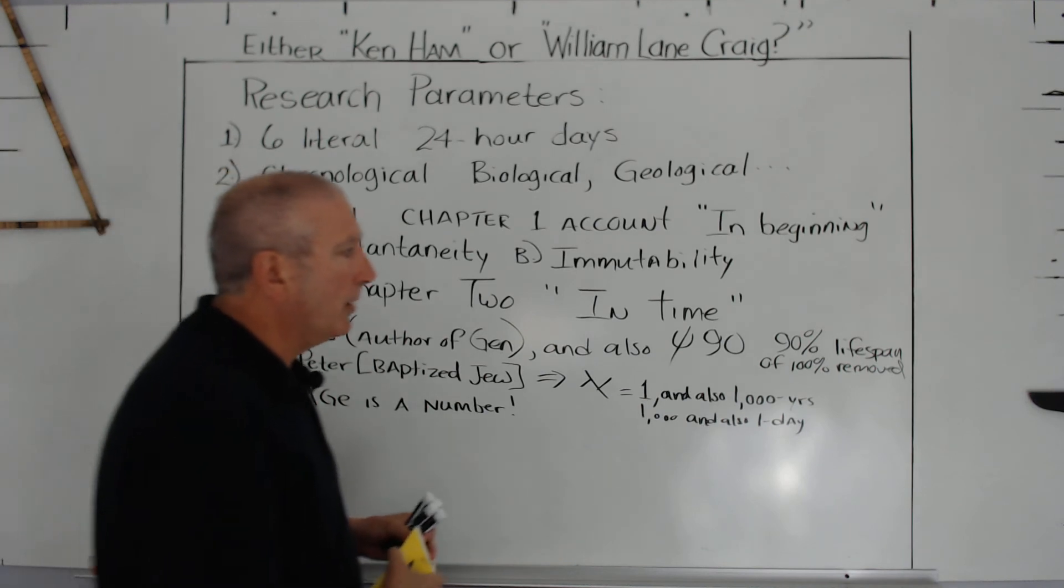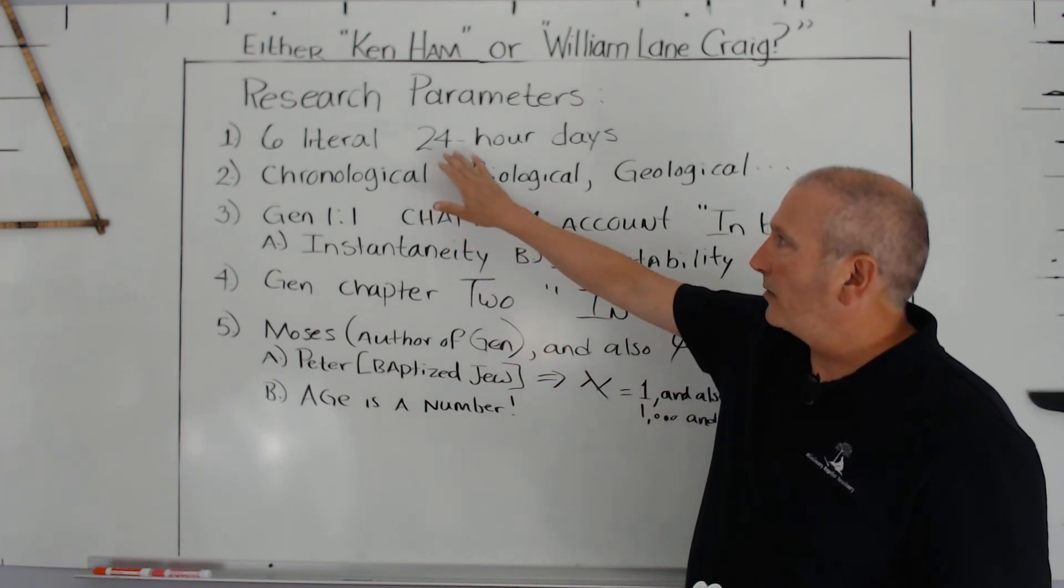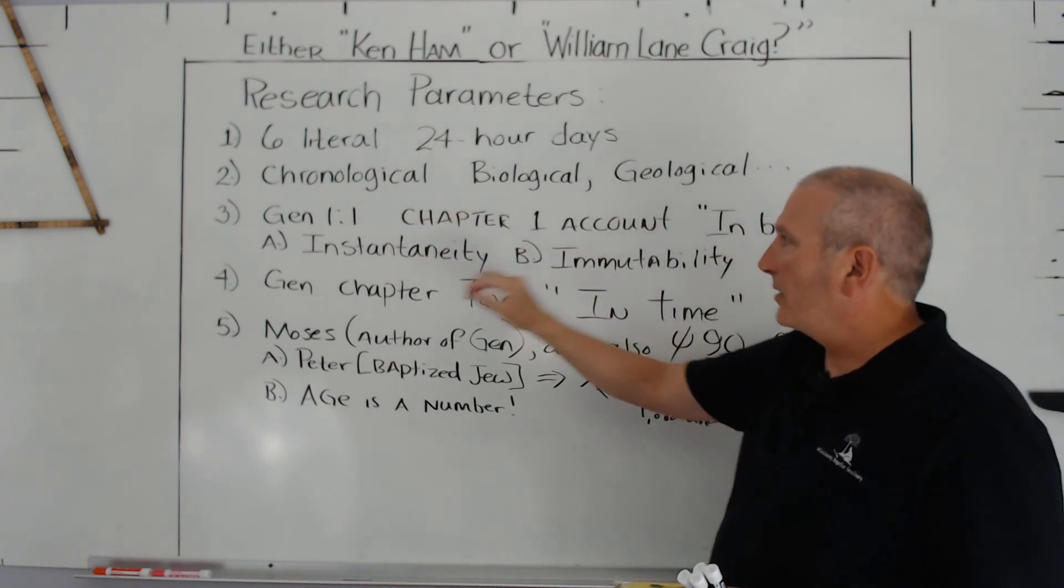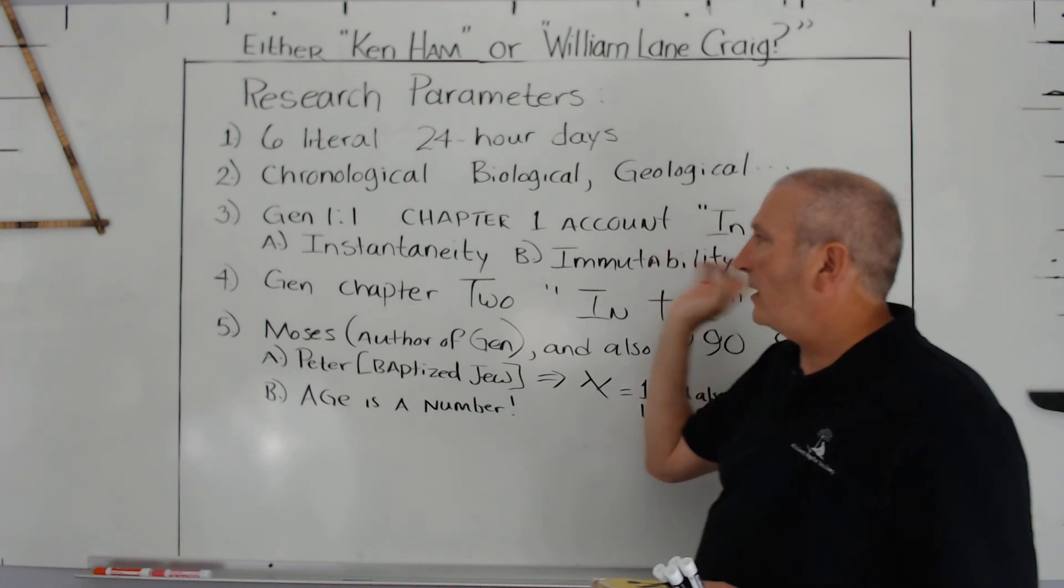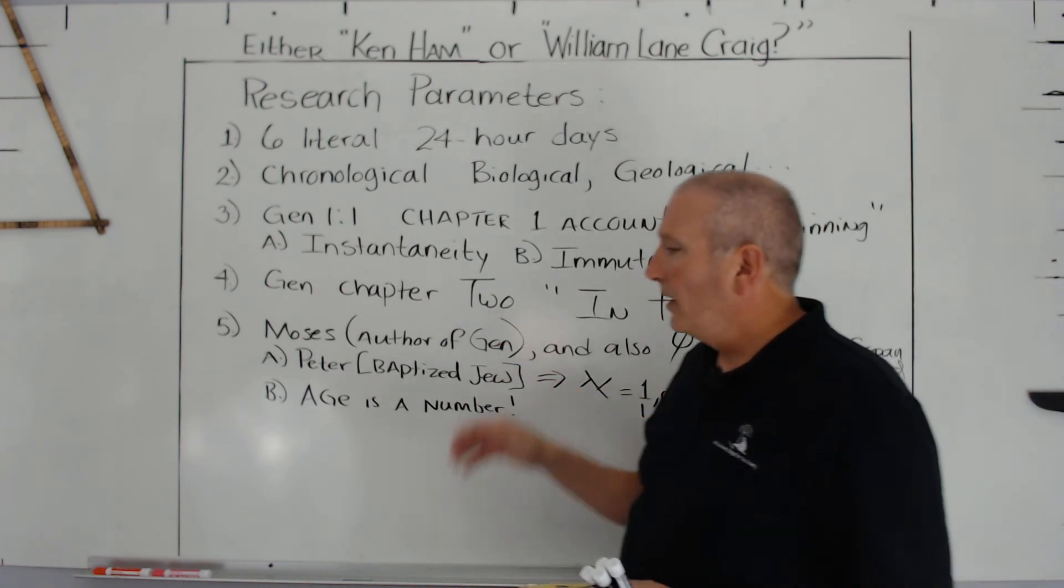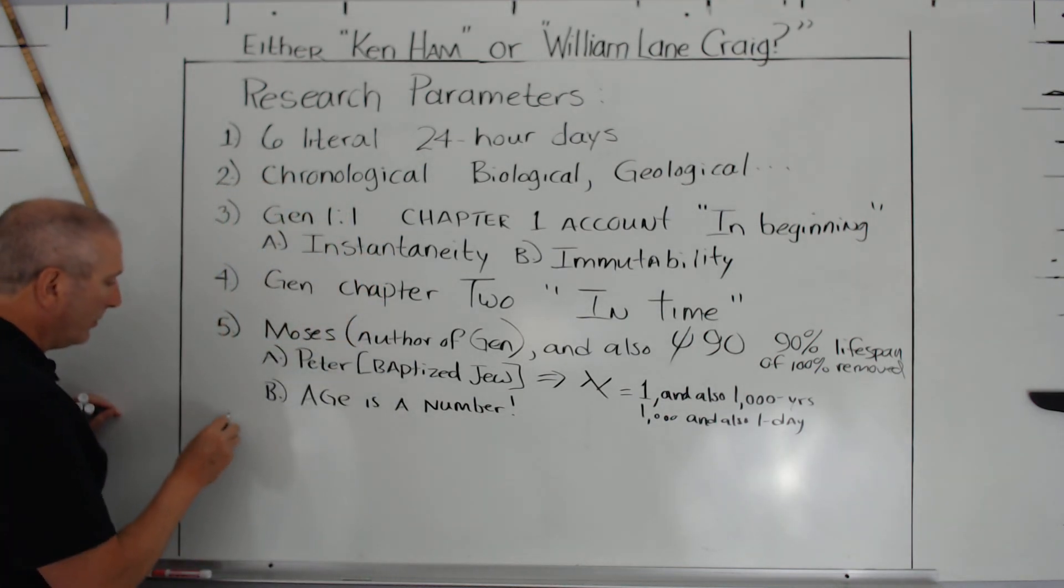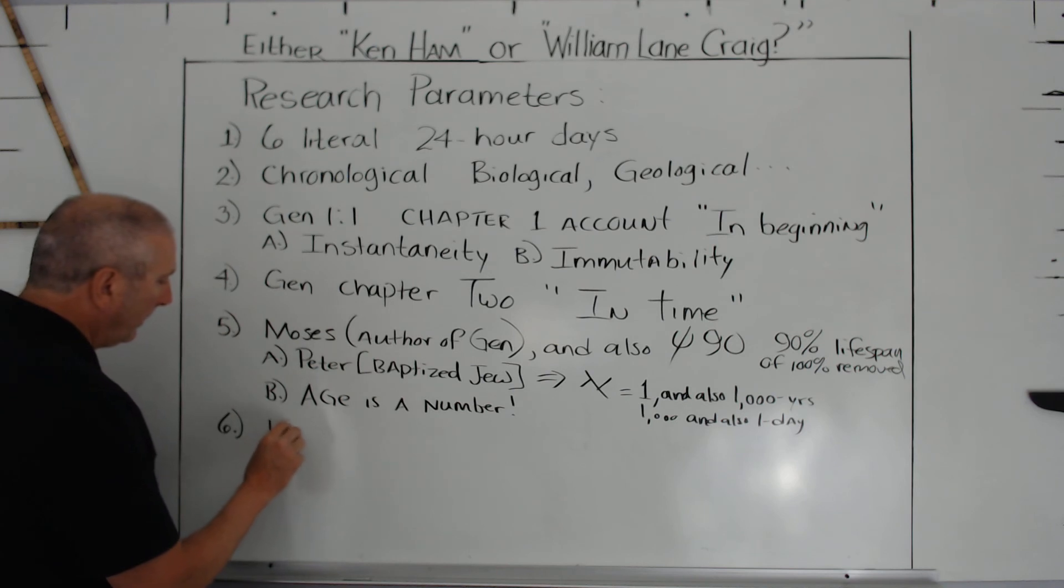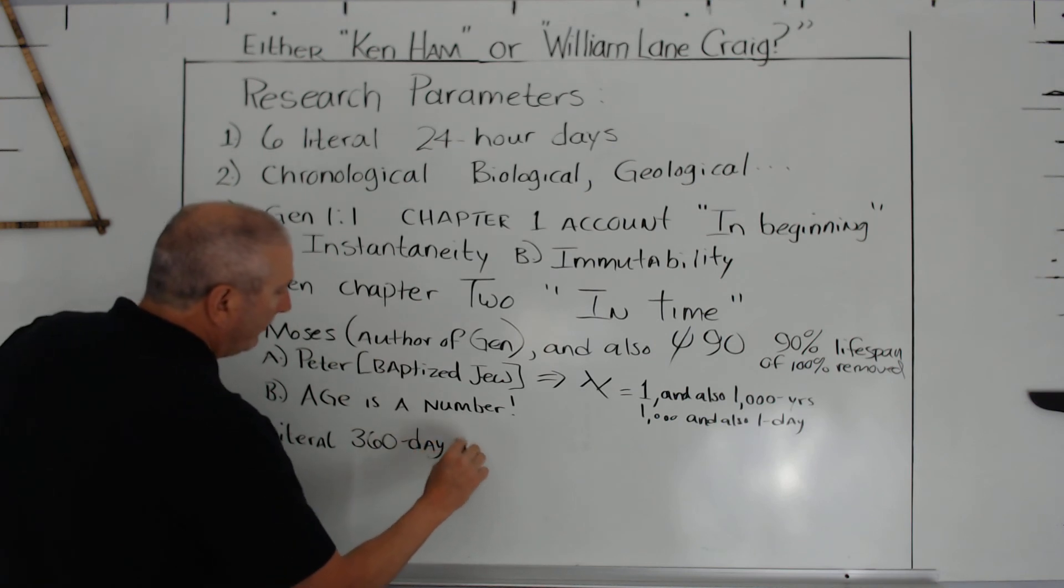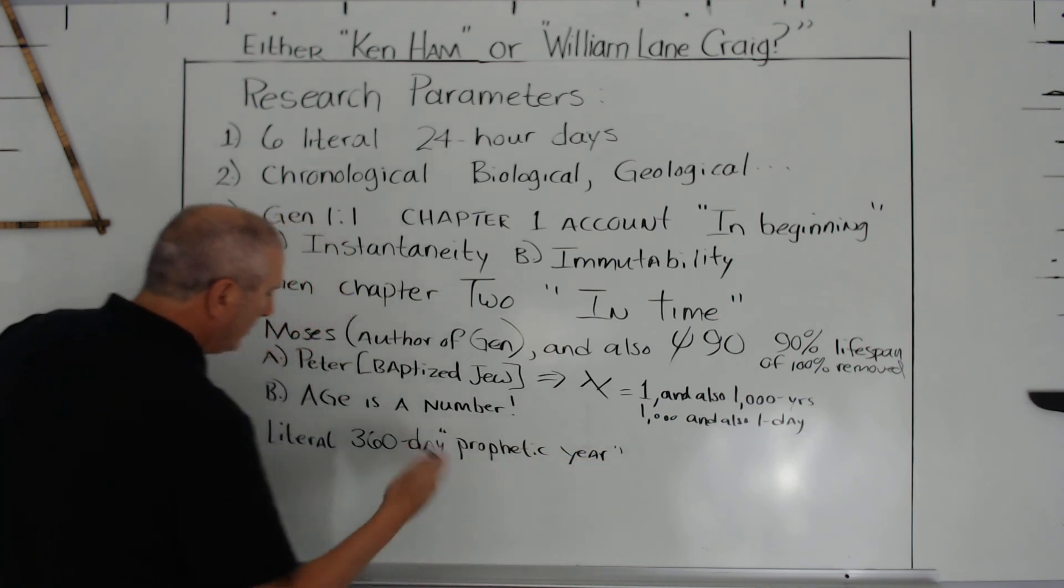But in response to William Lane Craig, we can say we want to demonstrate that there's six literal 24-hour days. We can acknowledge the chronological, the biological, geological. We can acknowledge Genesis 1, chapter 1 account of creation in the beginning. We can keep instantaneity, immutability of God. Look at Genesis 2, where we have an end-time creation demarcated from Genesis 1:1. We then have number 6, literal 360-day prophetic year. These are our parameters.